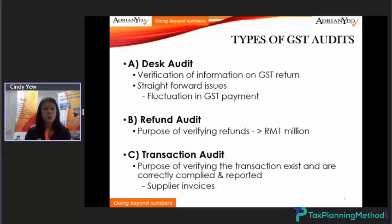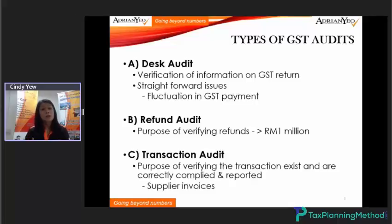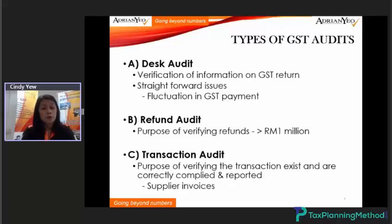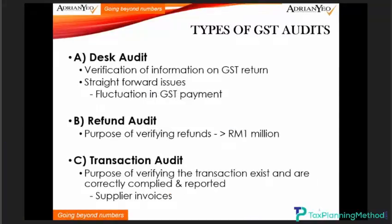The custom department sends a letter asking for certain information and documents to be furnished. Under the text audit, they need to verify the information in the GST return. Normally this is a straightforward issue, such as fluctuations in GST payment — where one taxable period you have a huge GST output tax payable, and the next taxable period you have a huge GST tax refund, so your GST return goes up and down. In this case, they may come for a tax audit.